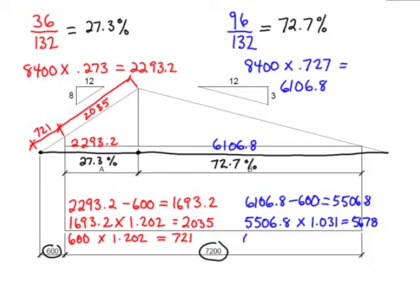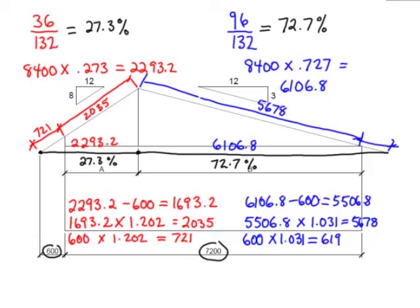And then I can take my overhang, 600 times 1.031 is equal to 619. So on my right side, this distance here, 5,678. And my overhang, 619.